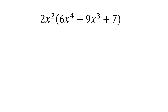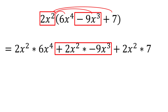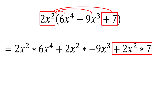The way to simplify an expression like this is to use what is called the distributive property, meaning multiply 2x squared by each of the three terms of the polynomial in parentheses. So this expression can be written as 2x squared multiplied by 6x to the fourth, plus 2x squared multiplied by negative 9x to the third, plus 2x squared times 7.